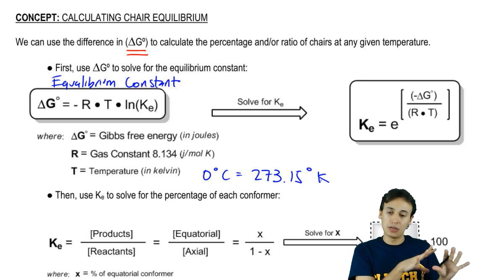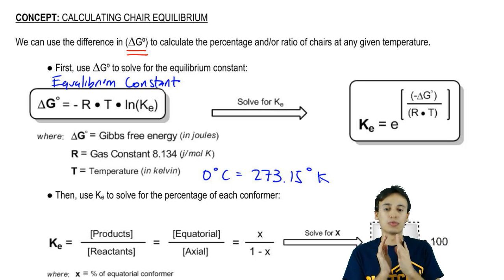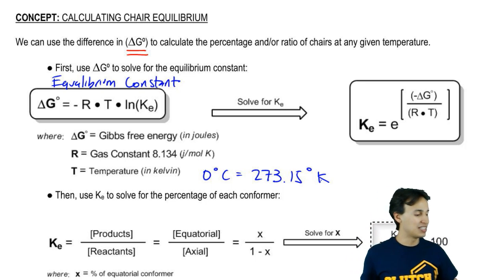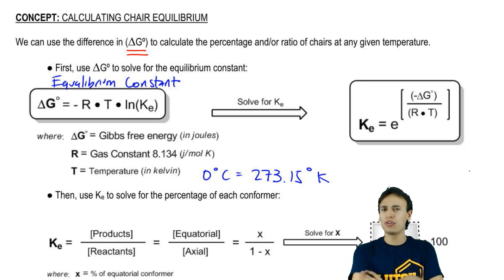If we can just plug in these variables, we're going to get the equilibrium constant. Now, we know what R is. We know what T is. Your calculator tells you what E is. All we need is negative delta G. Do we have a way to find that?